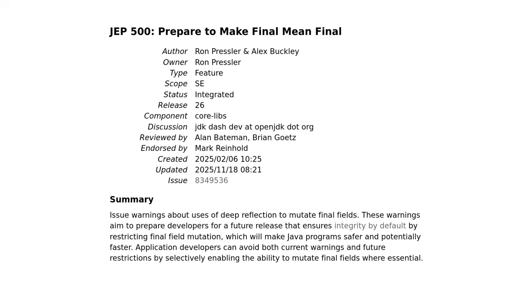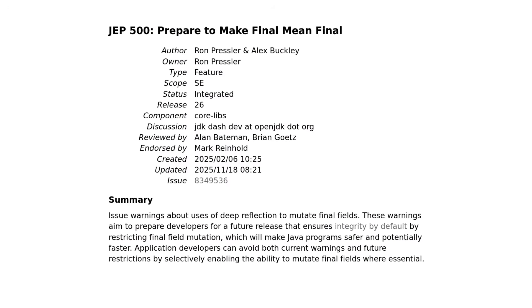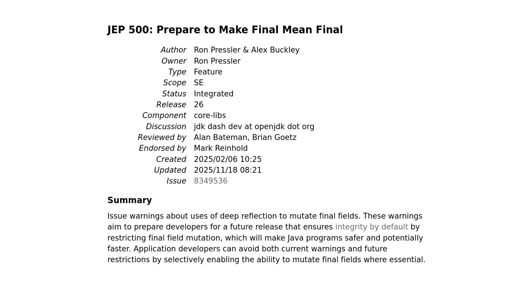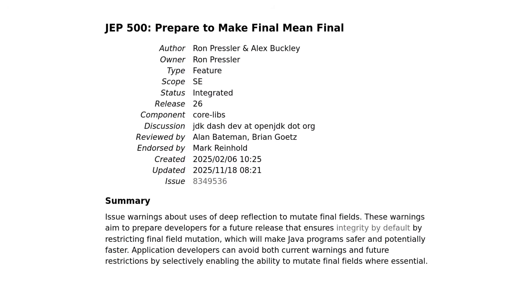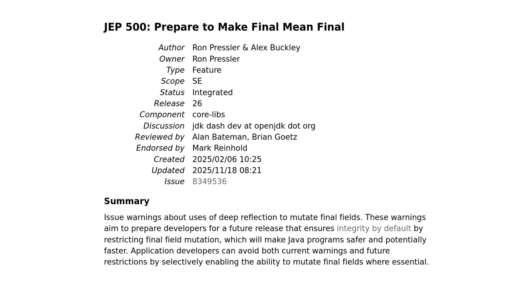JDK Enhancement Proposal 500, which is already integrated into JDK 26, sets out on a path that changes that. Without further command line options, a final field will be truly final — neither use of the language, nor of any API, nor even JNI will be able to mutate it after construction.